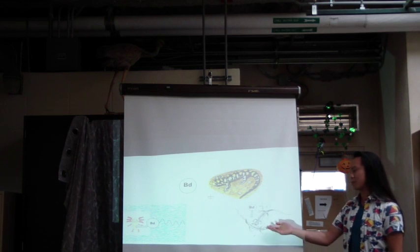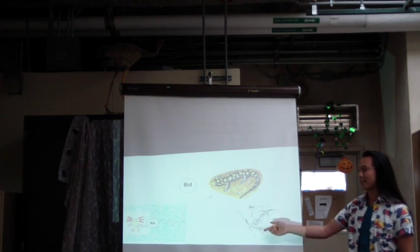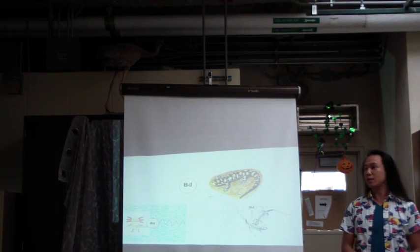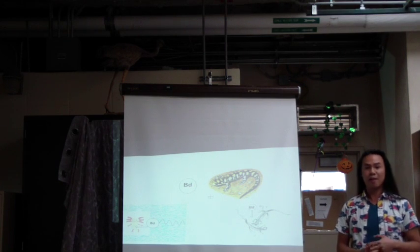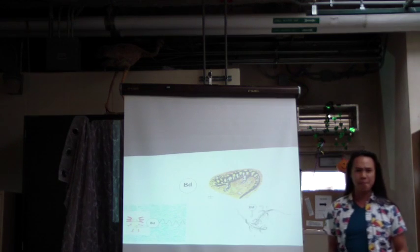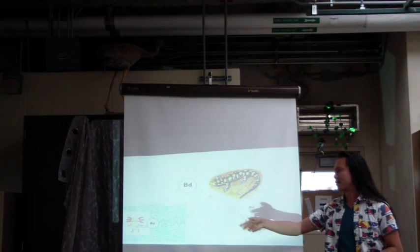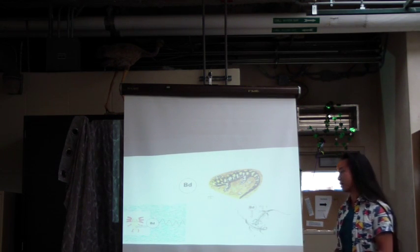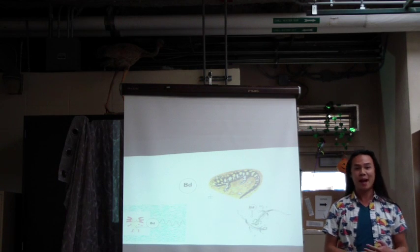One is skin-to-skin contact between two individual salamanders, as you can see here. Another is through part of the fungal life stage in which it exists as an aquatic cell. This aquatic cell swims in water, finds an aquatic amphibian, latches onto its skin, and affects it similarly.